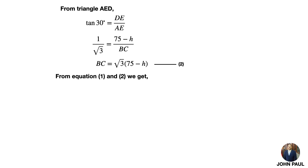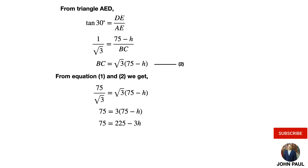From equations 1 and 2: 75 by root 3 equals root 3 into (75 minus H). Multiplying both sides by root 3: 75 equals 225 minus 3H. Taking 3H to the left hand side: 3H equals 225 minus 75 equals 150. Dividing 150 by 3 gives 50 feet. Therefore, the height of the pole equals 50 feet.